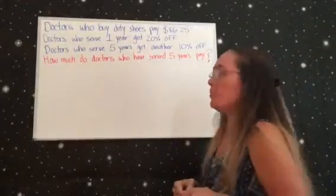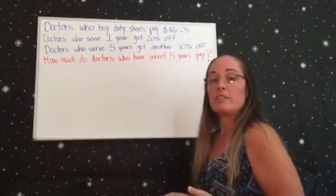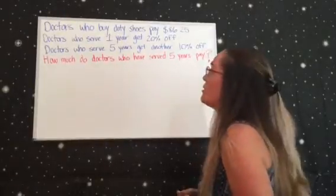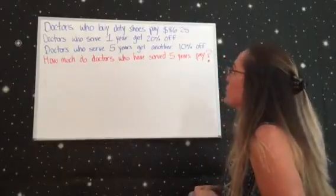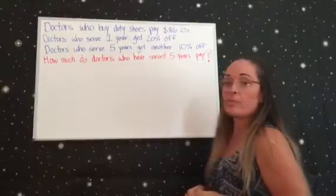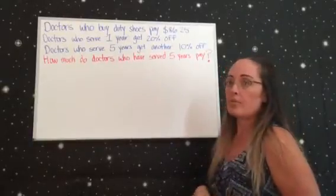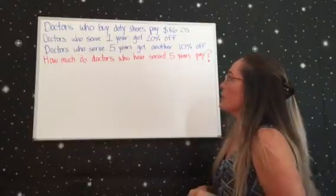The next problem deals with percentages and how to find a percentage when you need to get a discount off a price. This says doctors who buy duty shoes pay $86.25. Doctors who serve one year get 20% off of that price, and doctors who serve five years get another 10% off. How much do doctors who have served five years receive as the price they have to pay?